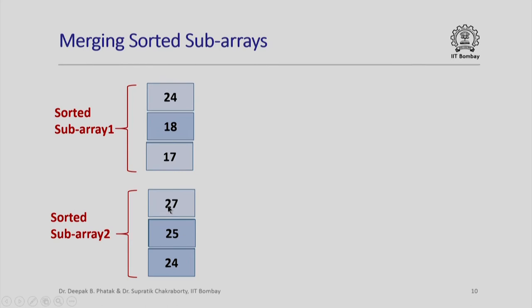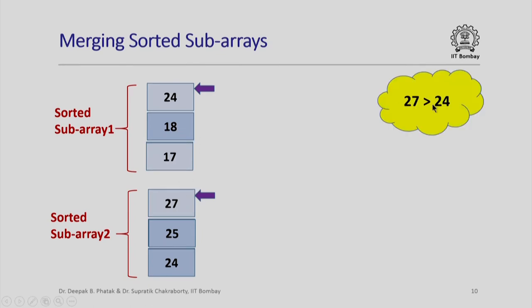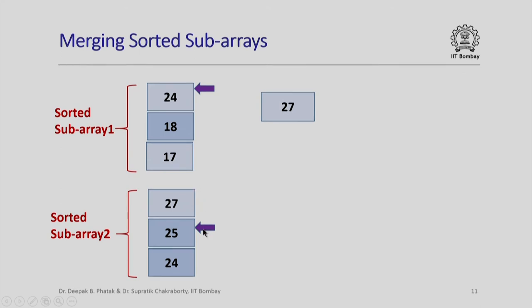Here I have two sorted subarrays, each containing three elements, both sorted in decreasing order. I want to merge them to find one sorted array of six elements in decreasing order. I have an index pointing to the current maximum element in each subarray and check which is larger. Here 27 is greater than 24, so since 27 is the largest in its subarray and already greater than the largest in the other subarray, it must be the largest overall. I place it at the topmost position and increment the pointer to the next element in that subarray.